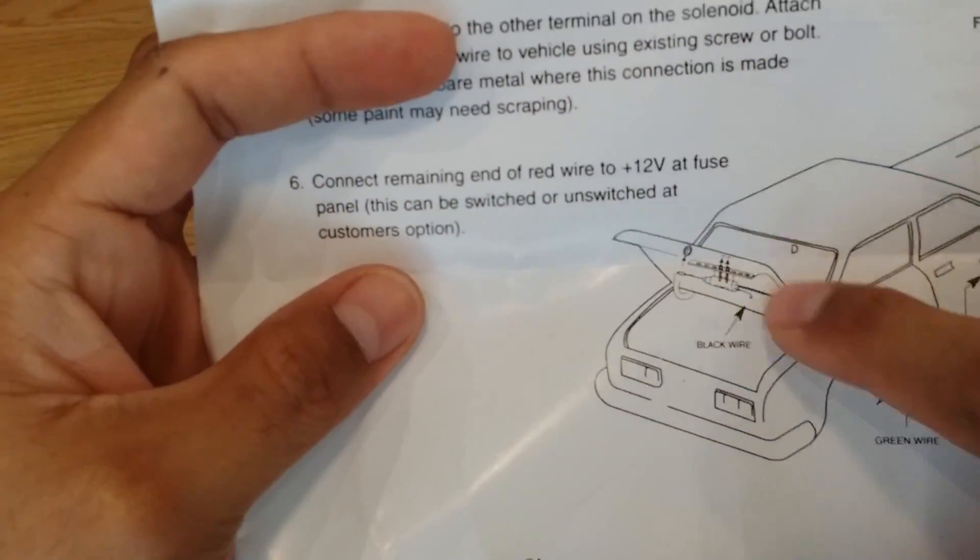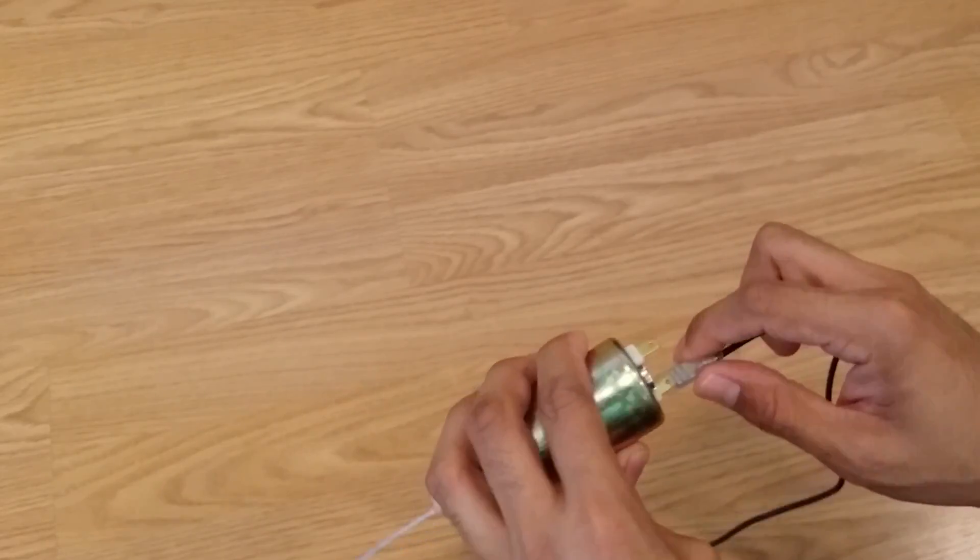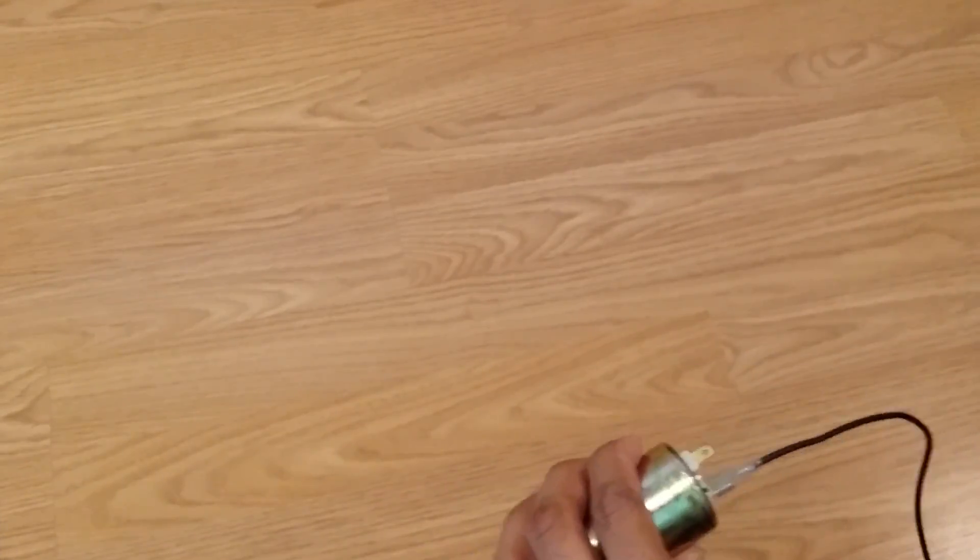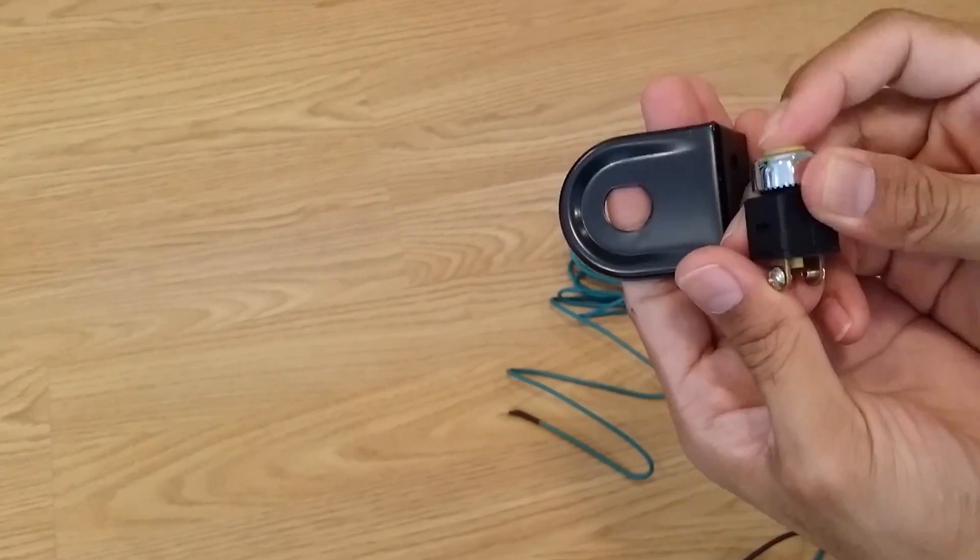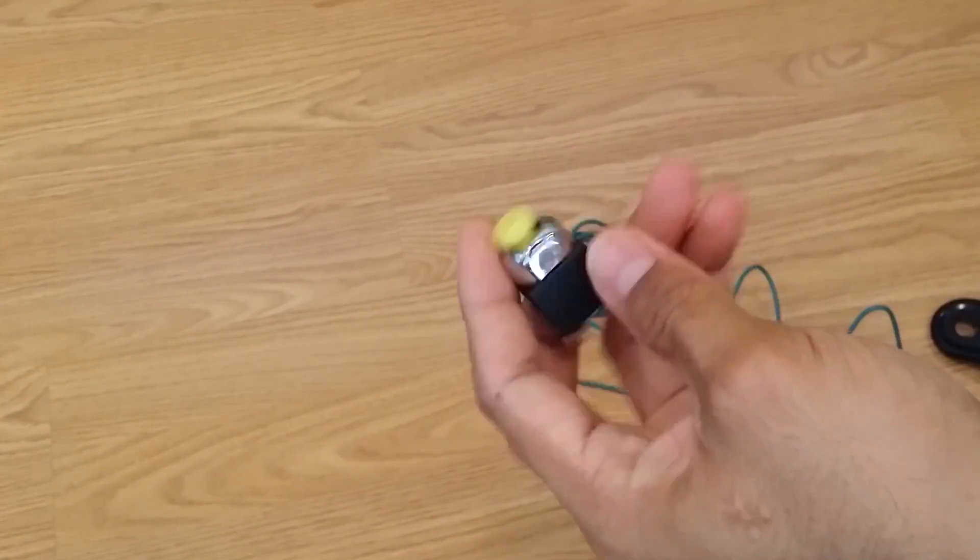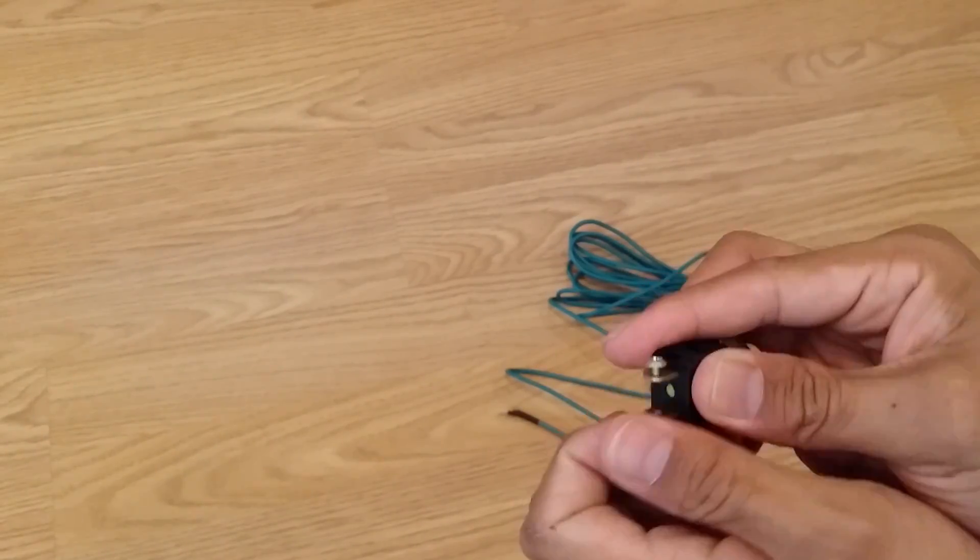So let's just connect up what we can before making our way to the car. Connect the green and black wire to the solenoid, then connect the other end of the green wire to one side of the button, and the red 12-volt constant wire to the other end of the button.